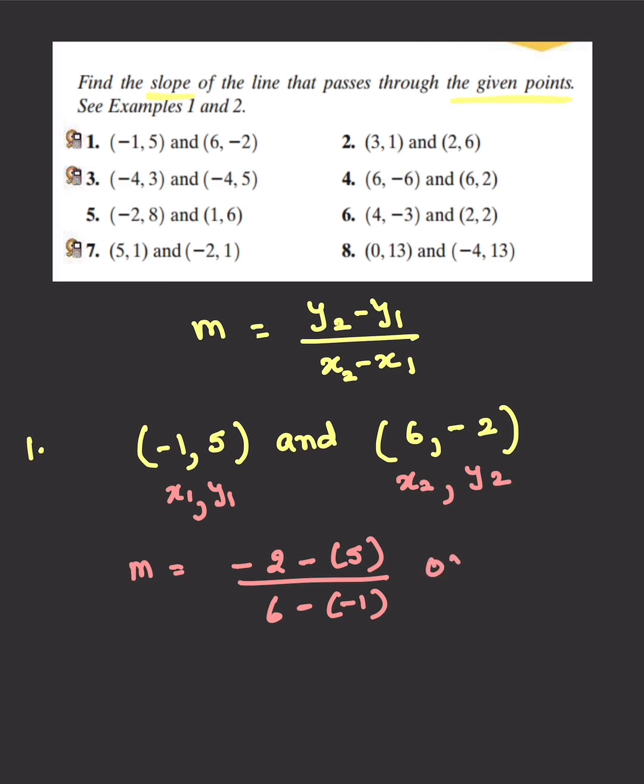You can also choose to write this without the parentheses: -2 minus 5 and 6 minus -1. Remember, two negatives will make it a positive, and we will get -7 over positive 7. -7 over positive 7, and our slope would be -1.